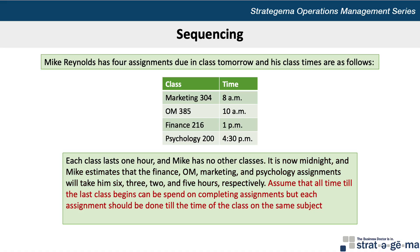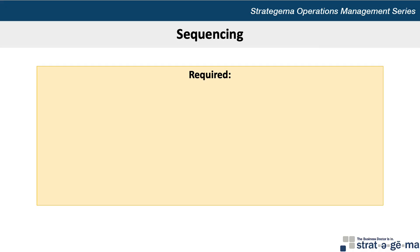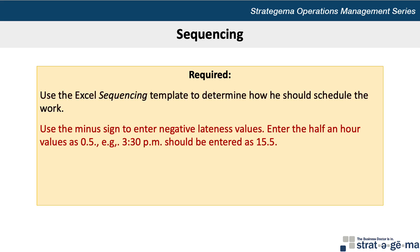Assume that all time till the last class begins can be spent on completing assignments, but each assignment should be done by the time of the class on the same subject. Mike can prepare assignments for the next class during previous classes. Our requirement for this problem is to use the Excel sequencing template to determine how we should schedule the work. Use the minus sign to enter negative lateness values. Enter half-hour values as 0.5, so for example, 3:30 p.m. should be entered as 15.5.